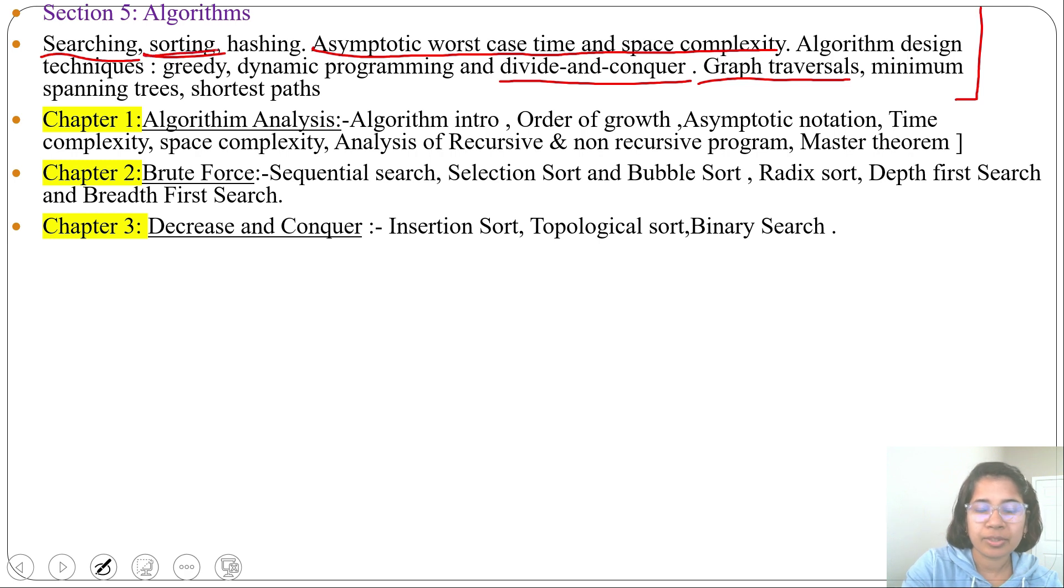Actually binary search comes under decrease and conquer also divide and conquer. Binary search we can say is decrease by constant factor. Decrease and conquer is of three types: one is decrease by constant, second is decrease by constant factor,